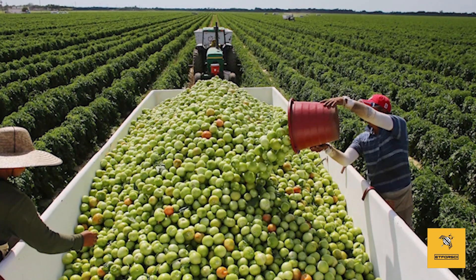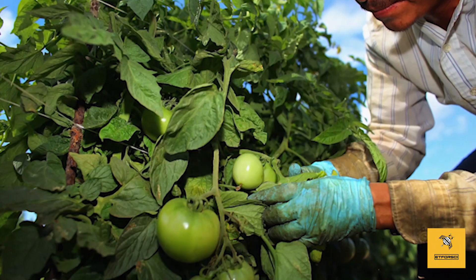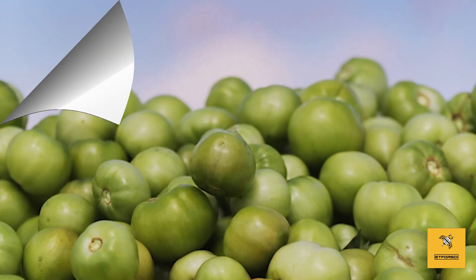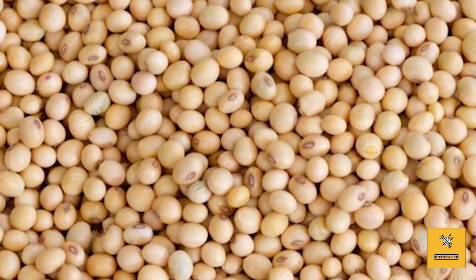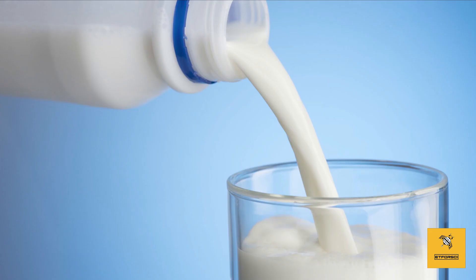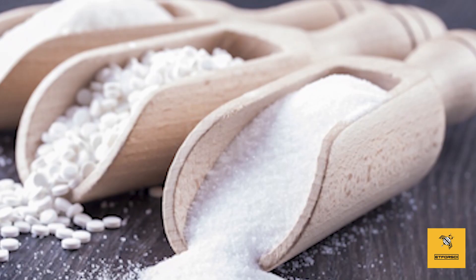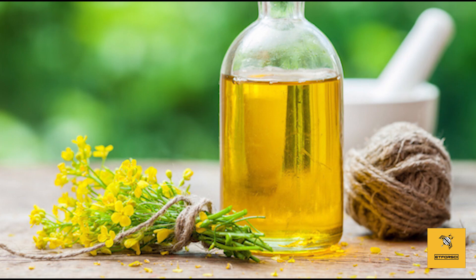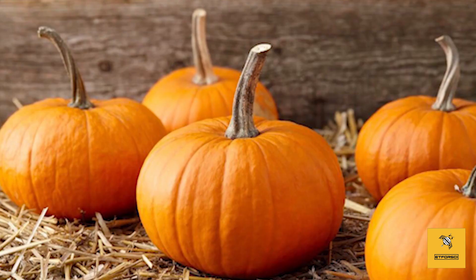Now let's find out what genetically modified organisms foods are together. GMO foods: Soybean, corn, cotton, milk, sugar, aspartame, canola oil, pumpkin are among the most known GMO foods.